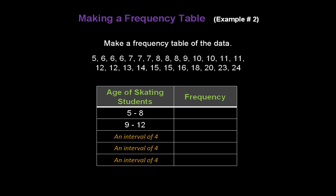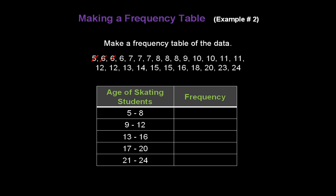Now that we have our intervals, let's count how often they occur in the data. For ages five to eight, counting the circled values gives us ten — so the frequency is ten. For ages nine to twelve, we count seven ages in that range — frequency of seven. For ages thirteen to sixteen, we count five ages — frequency of five.